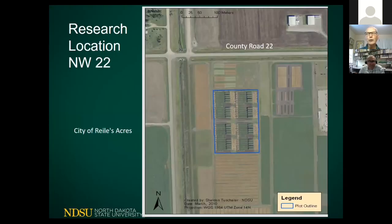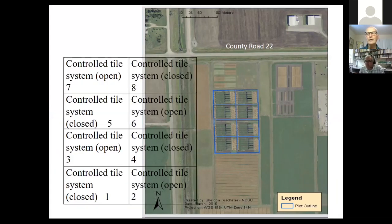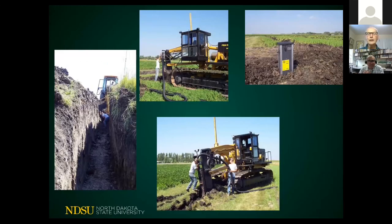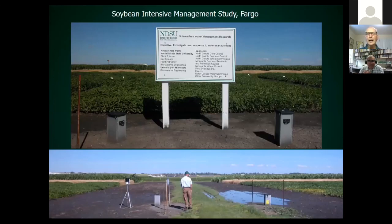I have a research plot not too far from campus and on this graph you can see there are eight blocks, and on each block I have one control structure. The control structure can manage the water level in each individual block. How I have set them up is I have some of them open and some of them closed, and the closed one is meant to mimic a non-tiled condition. Here we see some of the installation and the boxes are just at the edges of the fields.